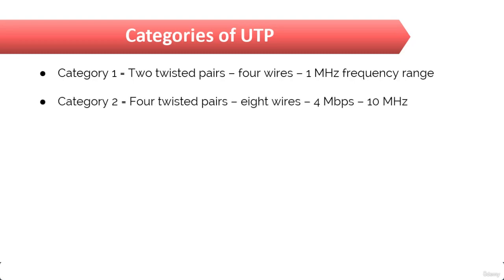Category 2, that is CAT 2, has four twisted wire pairs, which is equivalent to eight wires. It handles up to 4 Mbps with a frequency limitation of 10 MHz and it is now obsolete. No one literally uses Category 1 and Category 2 anymore.